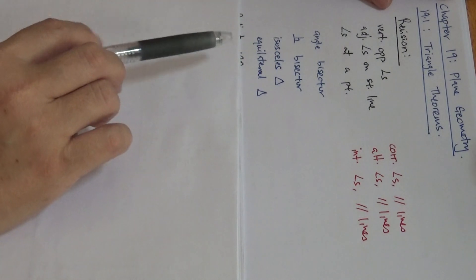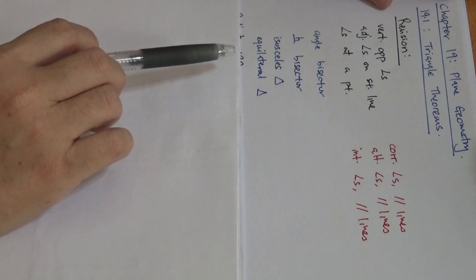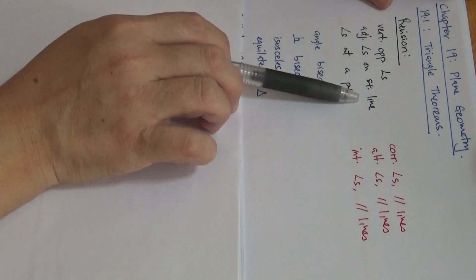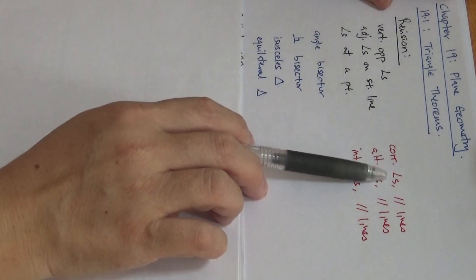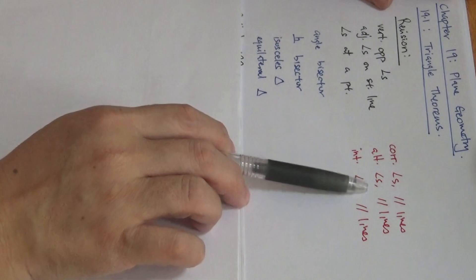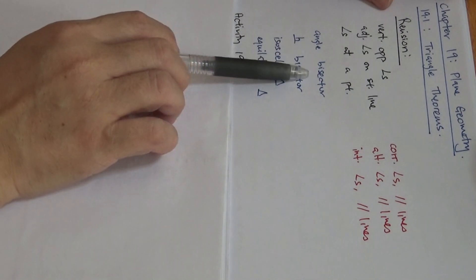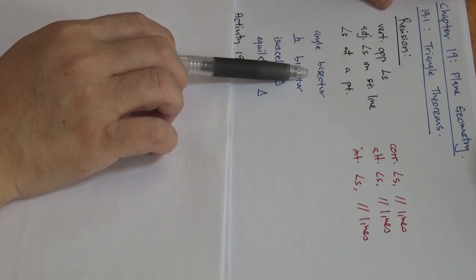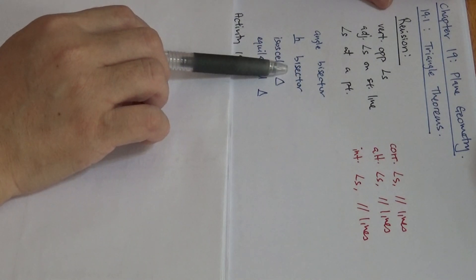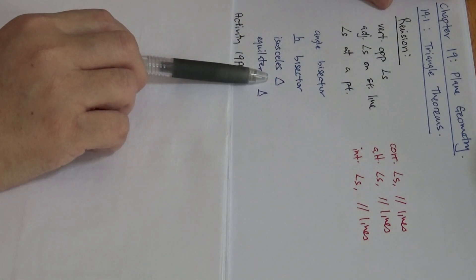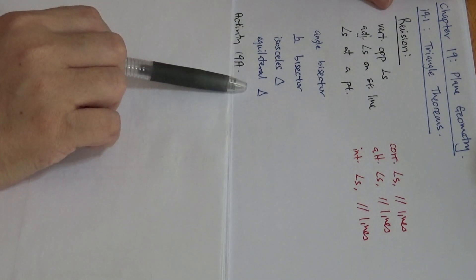All the things that we have learned in Maths are applicable to this section on proving. First we must know what is Vertically Opposite Angles, Adjacent Angles on Straight Line, Angles at a Point, Corresponding Angles Parallel Lines, Alternate Angles Parallel Lines, and Interior Angles Parallel Lines. We must also know what is an Angle Bisector — it divides the angle into two equal parts. A Perpendicular Bisector divides a line segment into two equal parts and is 90 degrees to the line segment. An Isosceles Triangle has two equal sides with two base angles equal. An Equilateral Triangle has three equal sides and three angles all equal to 60 degrees.